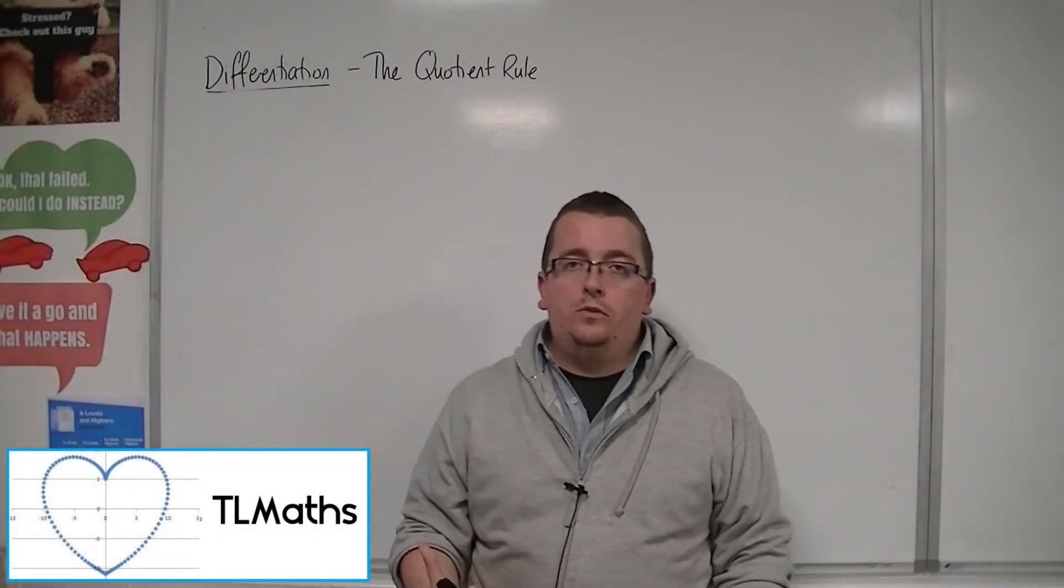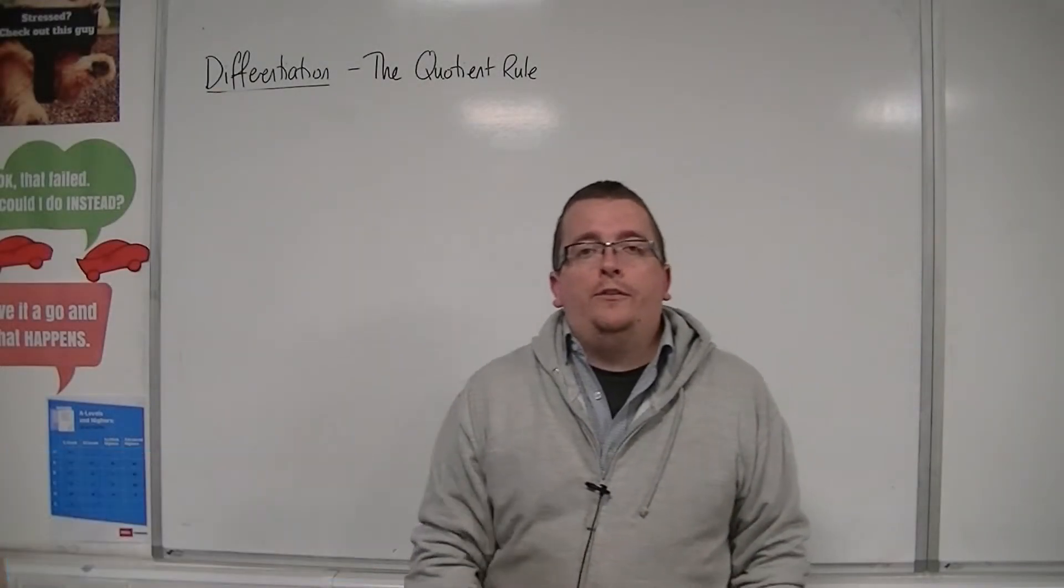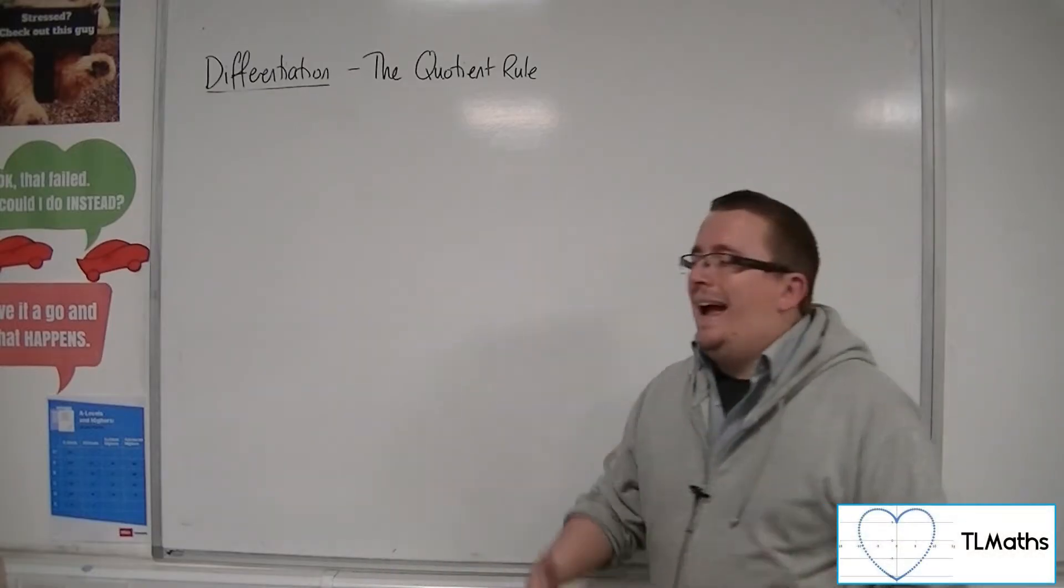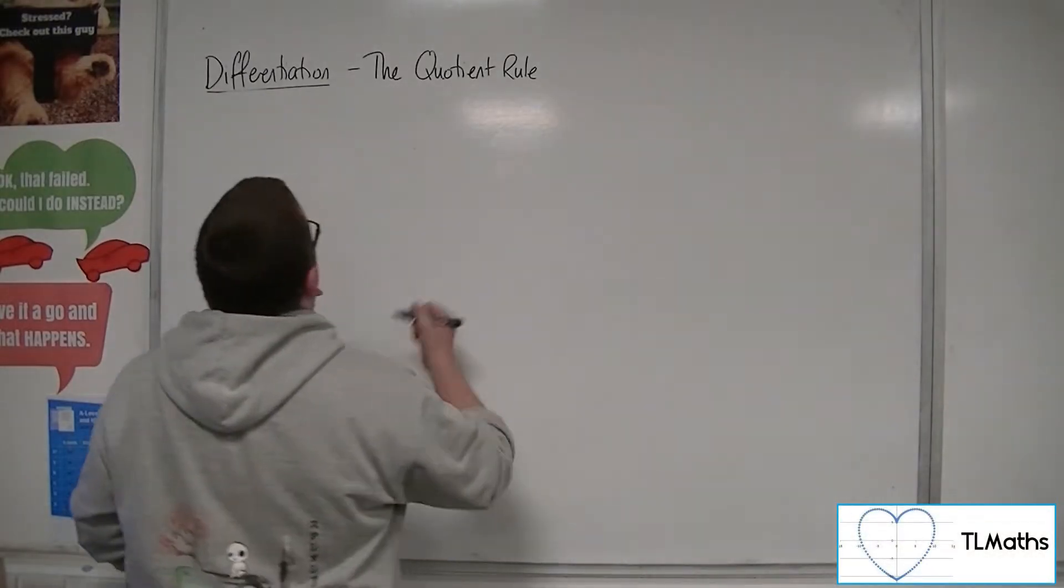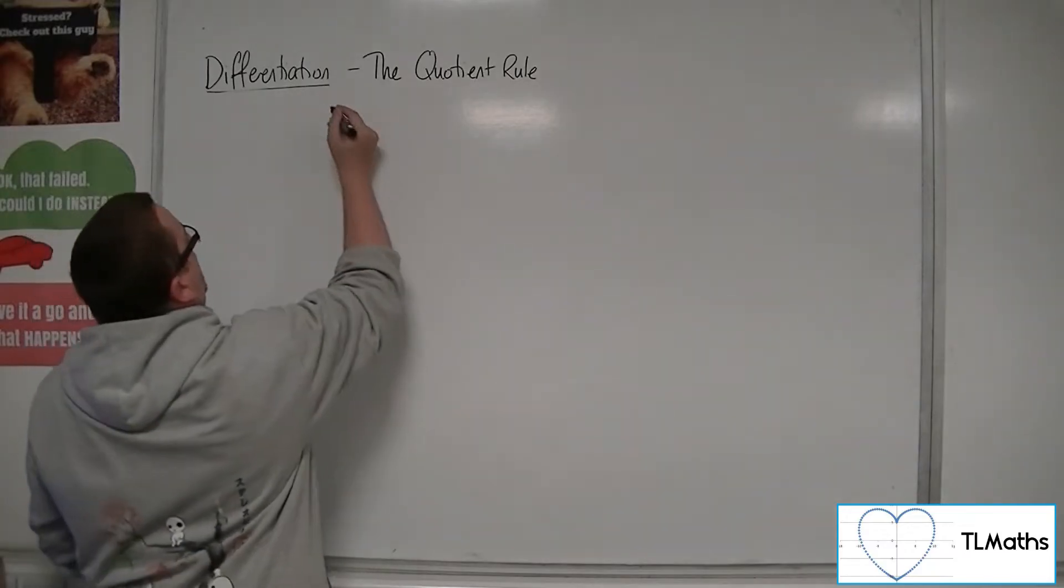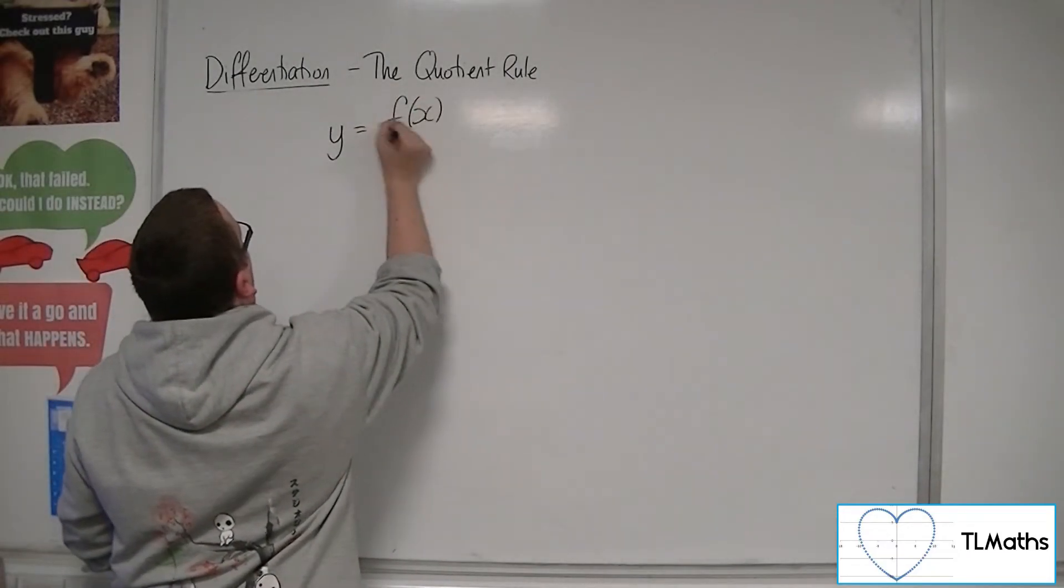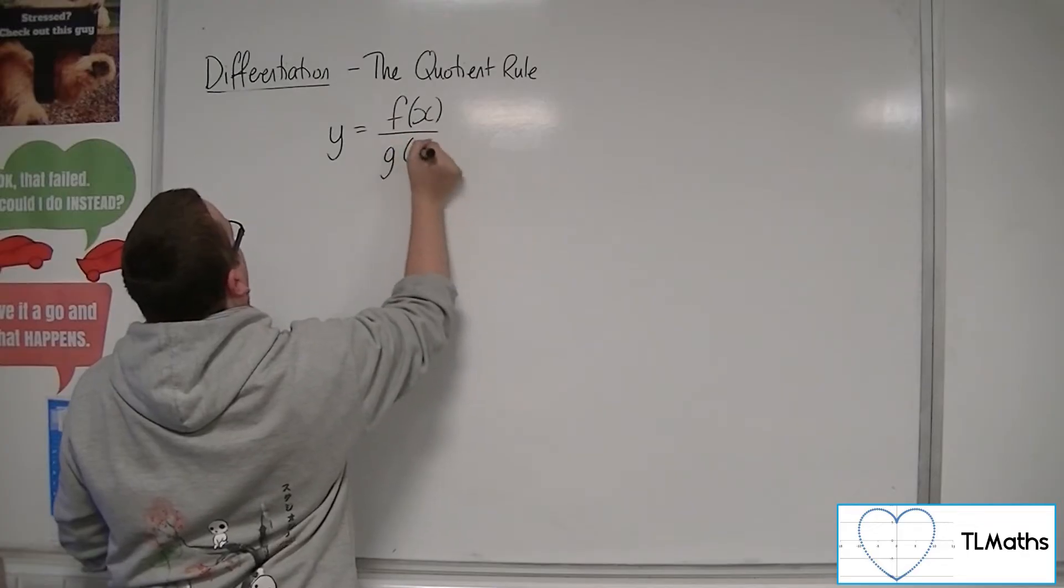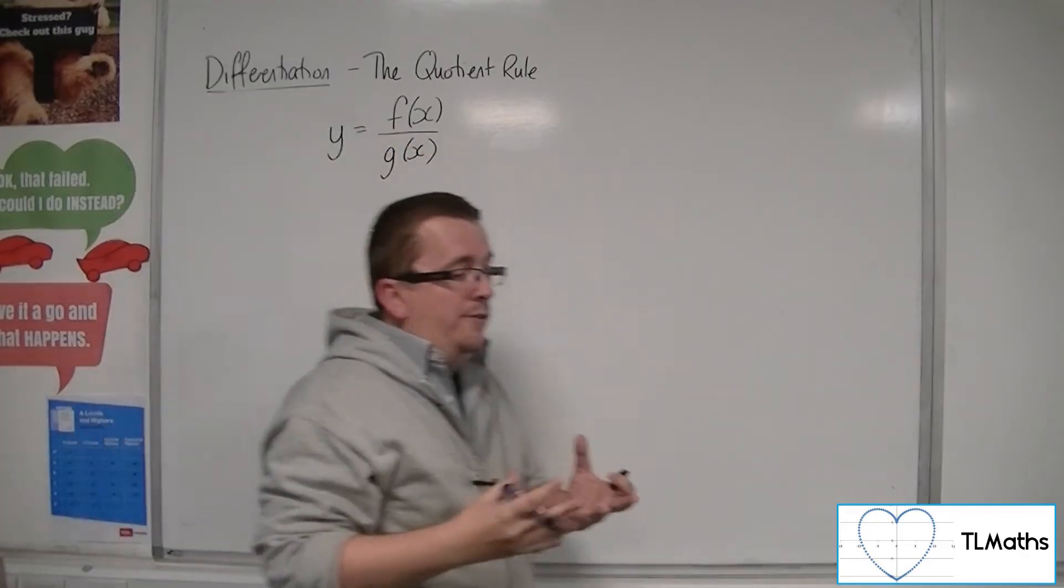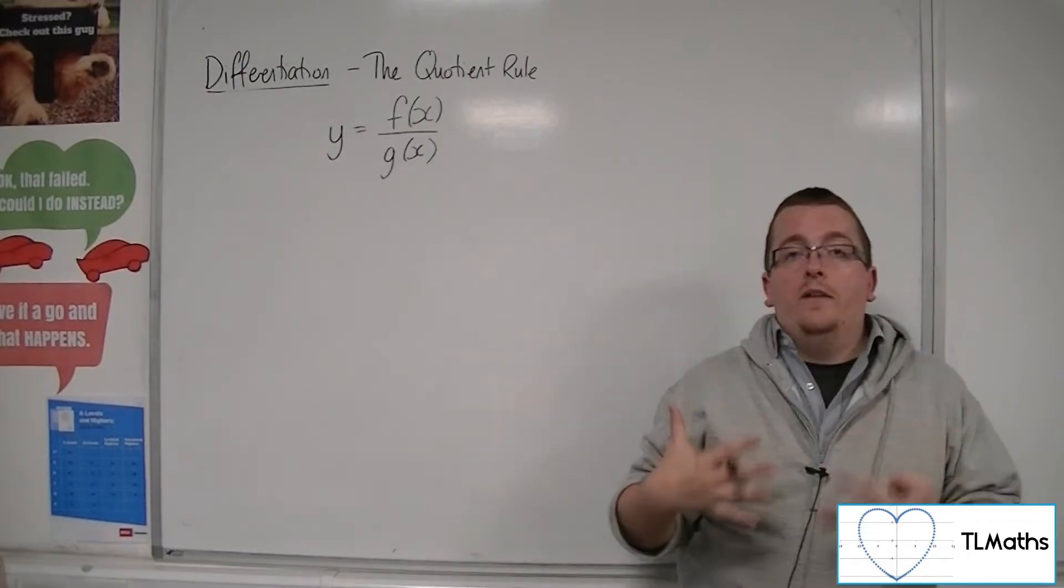The third and final differentiation rule is known as the quotient rule, and it deals with quotients of functions. In other words, functions of the form f(x) over g(x), where we clearly have one function divided by another.